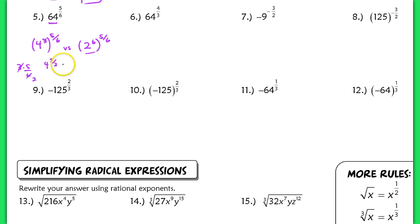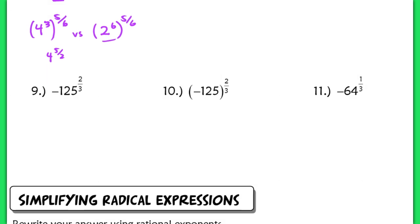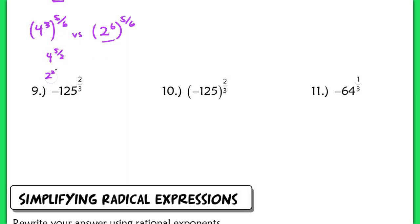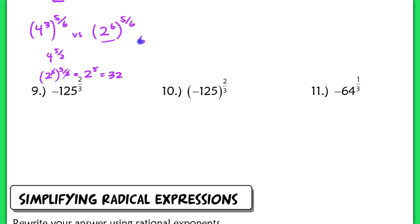With 4 to the 3rd raised to the 5 sixth, multiplying 3 times 5 sixth gives 5 halves. So I have 4 to the 5 halves power. Rewriting 4 as 2 squared, I get 2 squared to the 5 halves, and after multiplying exponents I get 2 to the 5th, which is 32. Alternatively, starting from 2 to the 6th raised to the 5 sixth, multiplying 6 times 5 sixth cancels to give 2 to the 5th, which is also 32. You have slightly less work if you recognize the smallest base.